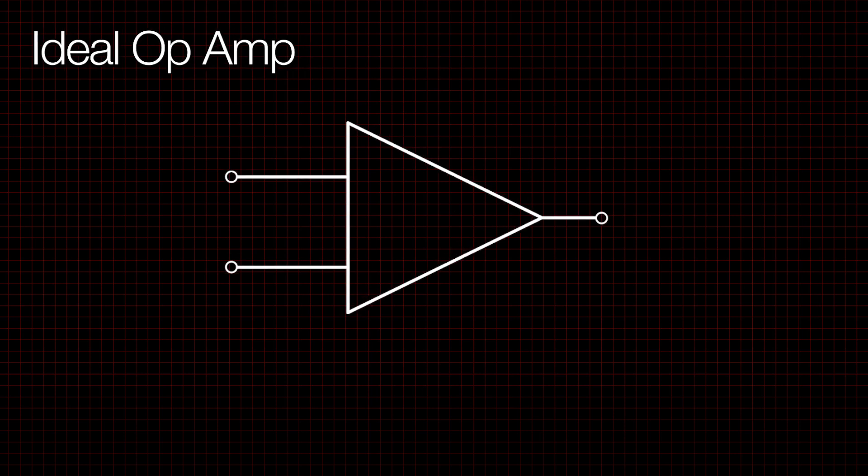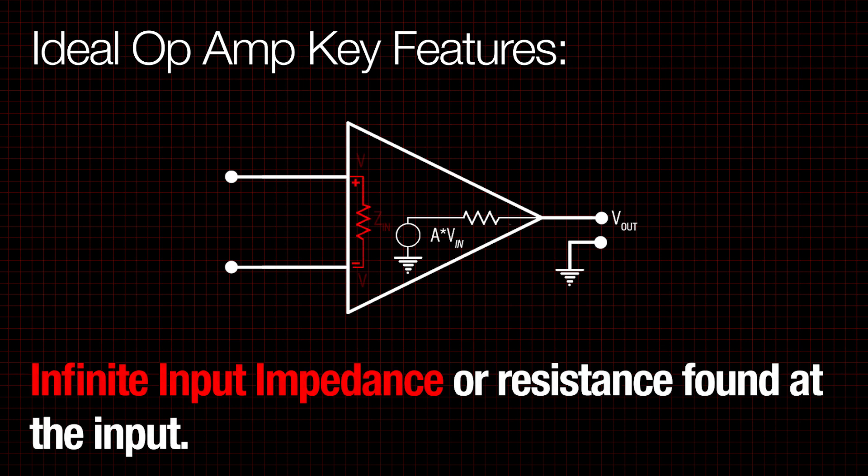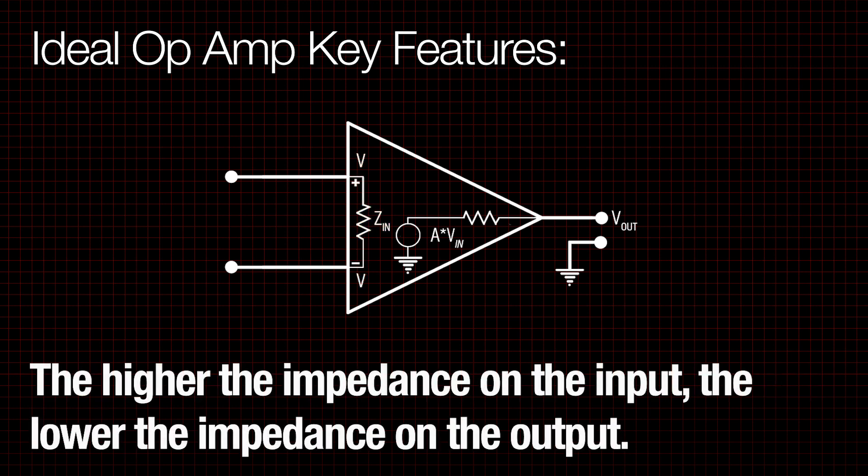The ideal op-amp includes these key features: infinite gain from the input to the output; infinite input impedance, or resistance found at the input. The higher the impedance on the input, the lower the impedance on the output.